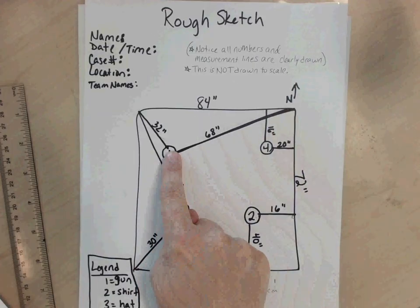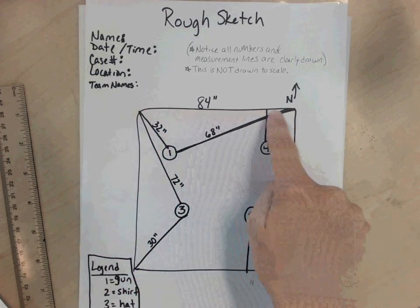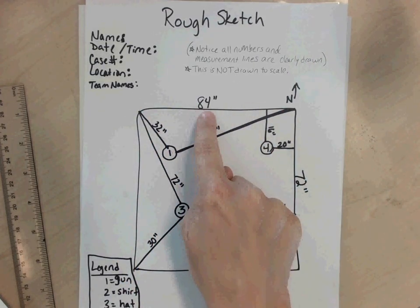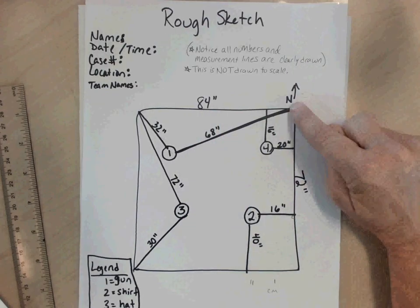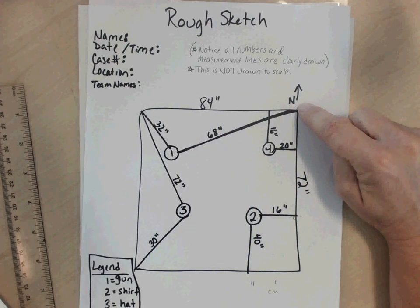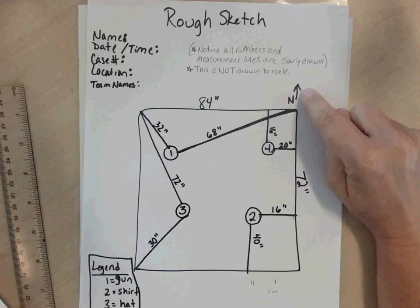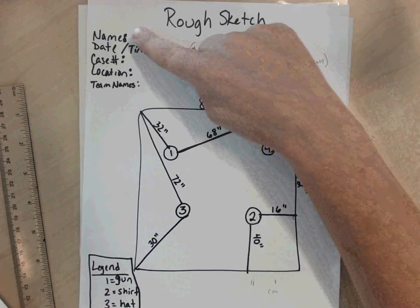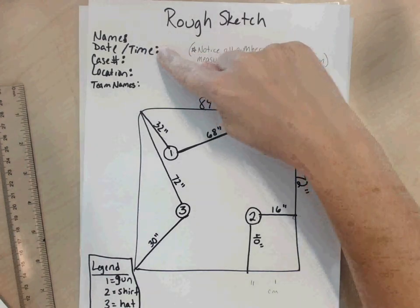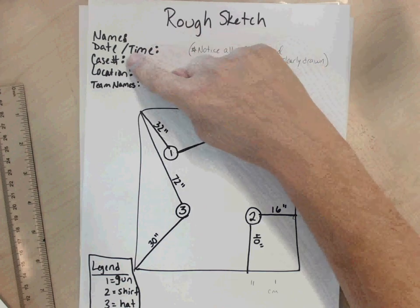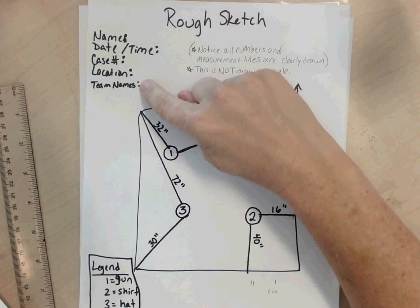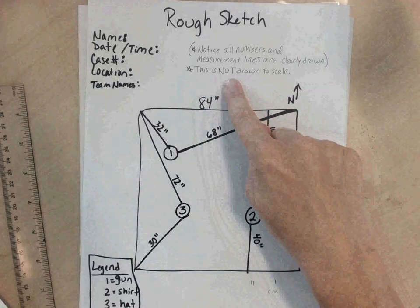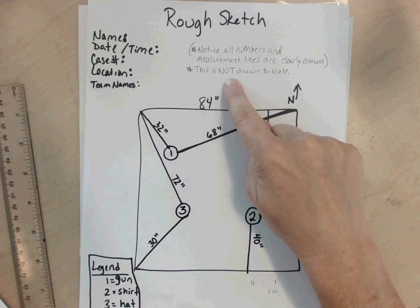So this is two sides of the triangle. To make the third side of the triangle, you need to know what the measurement of the wall is. We always include where north is, so we use this arrow showing that that way is north. You also include the name, time and date of when you were at the scene, the case number, location if you know it, and then the teammates if you had teammates. Notice this rough sketch is not drawn to scale.